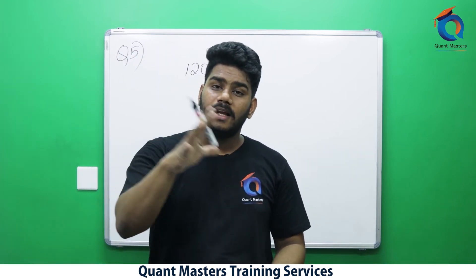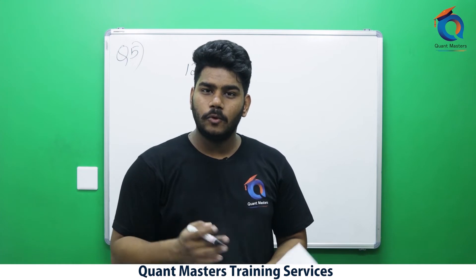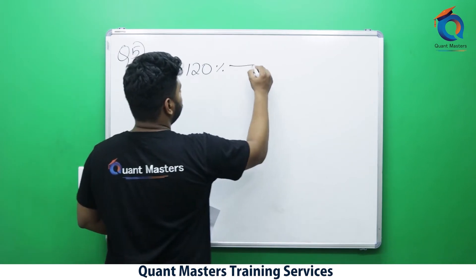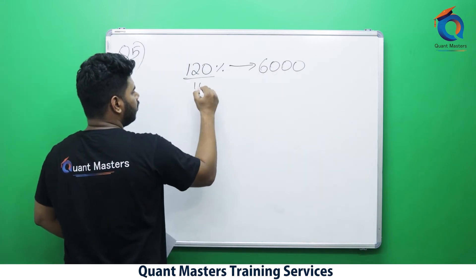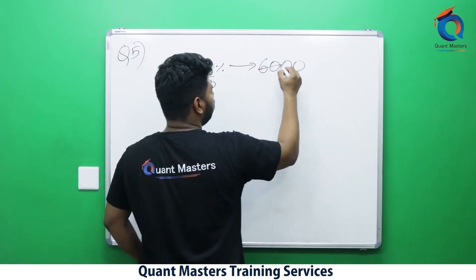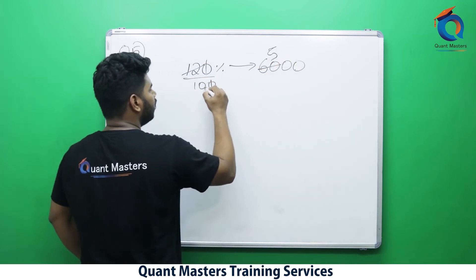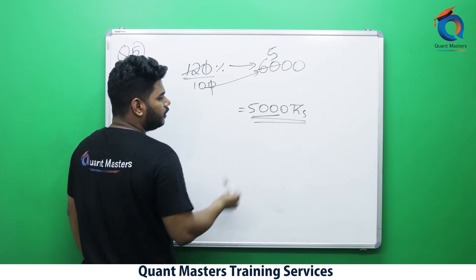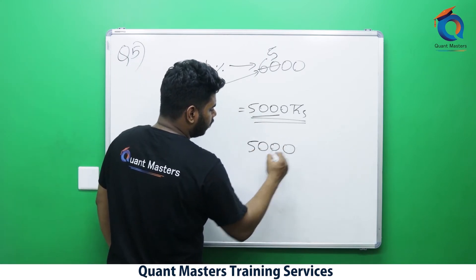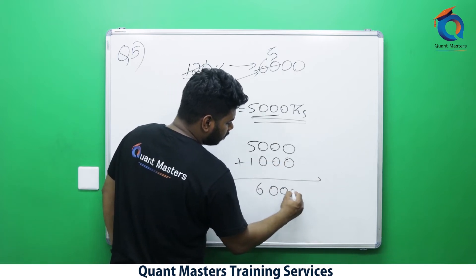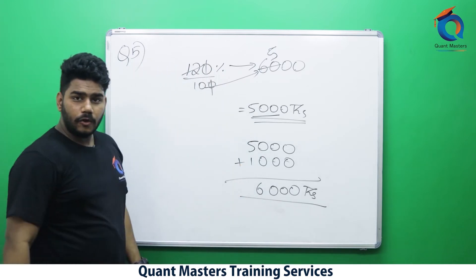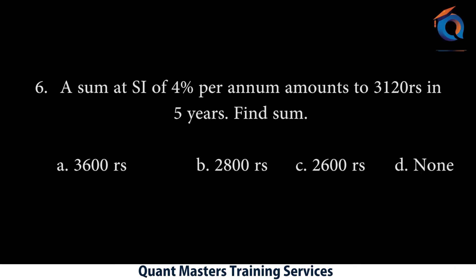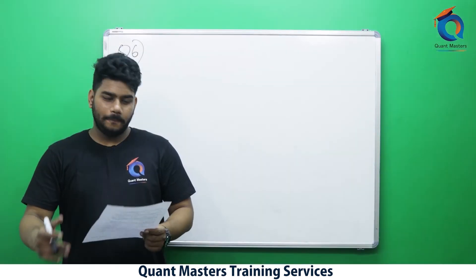If I take 100% and add 20% interest, the total amount to return is 120% of the principal. This 120% equals ₹6,000. So 120/100 × P = 6000; cancelling zeros gives 12 fives = 60, so P = 500 × 10 = ₹5,000. Verification: 10% of 5000 = 500, 20% = 1000; 5000 + 1000 = ₹6,000. Correct.